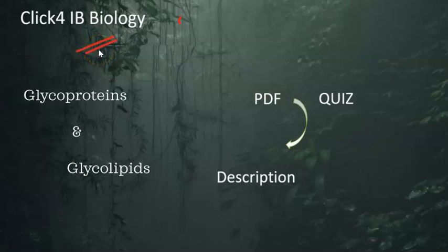This is IB Biology. We're now looking at other features of the cell membrane structure — specifically the function and role of glycoproteins and glycolipids.